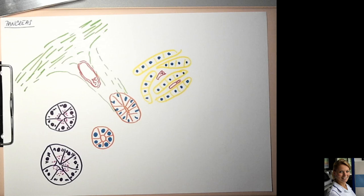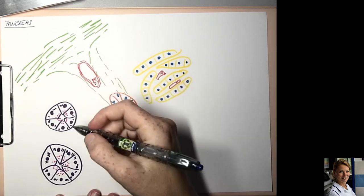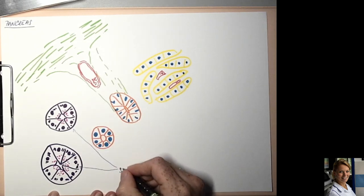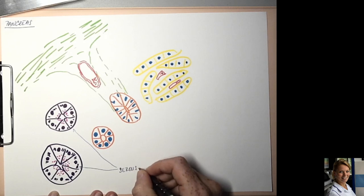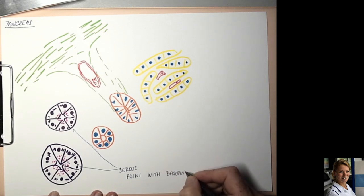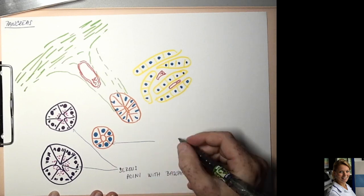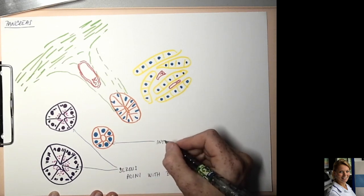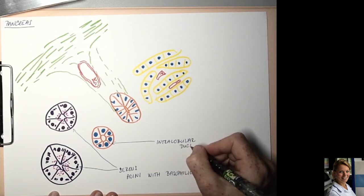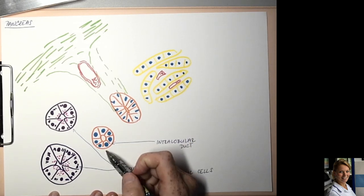So now we label the scheme. Here is a serous acinus with basophilic cells. Intralobular duct with simple cuboidal epithelium.